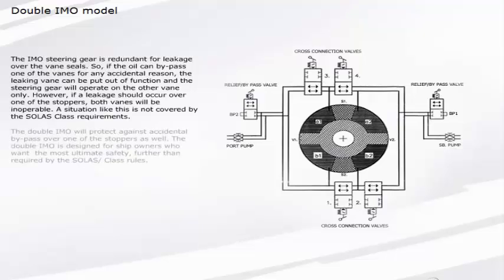The double IMO will protect against accidental bypass over one of the stoppers as well. The double IMO is designed for ship owners who want the most ultimate safety, further than required by the SOLAS or class rules.